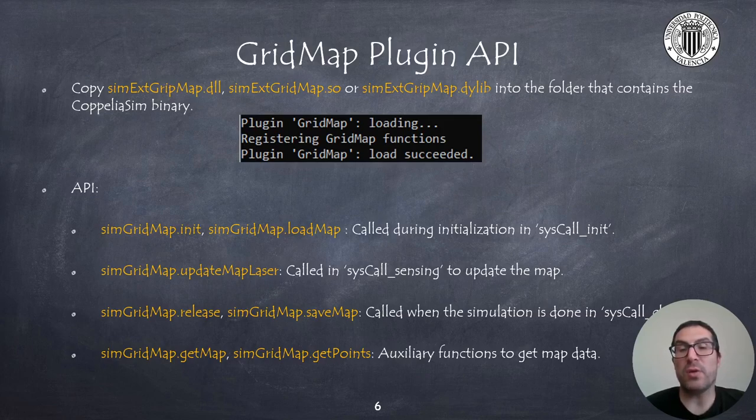The plugin also includes two auxiliary functions such as getMap and getPoints. The first one returns the occupancy grid map and the second one returns the points of the cells that are occupied. Both functions can be useful for later purposes, such as motion planning or avoiding obstacles.